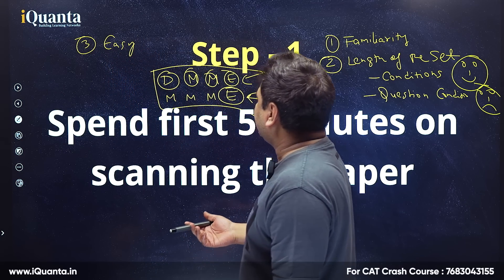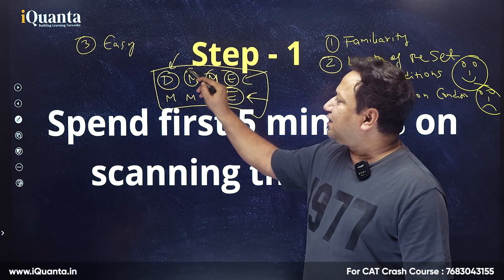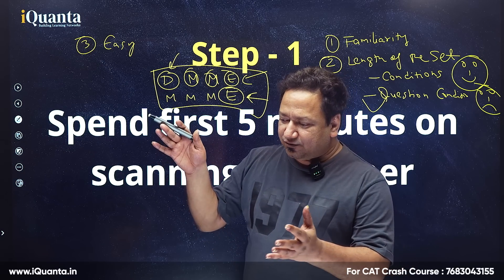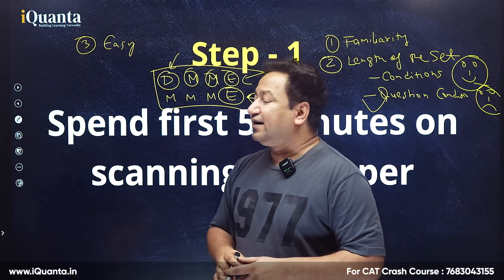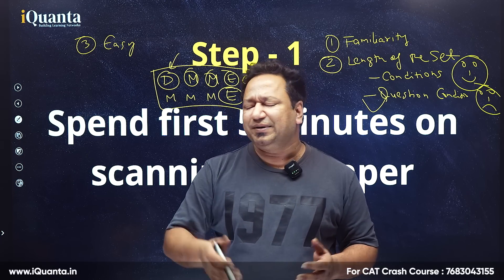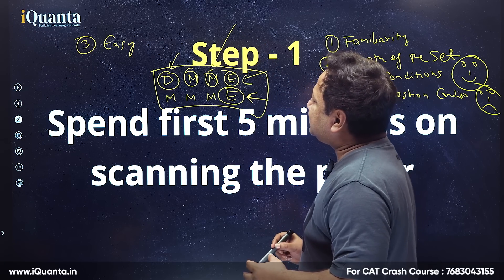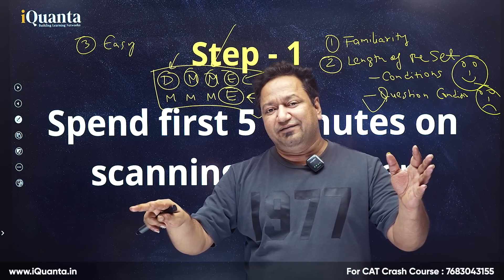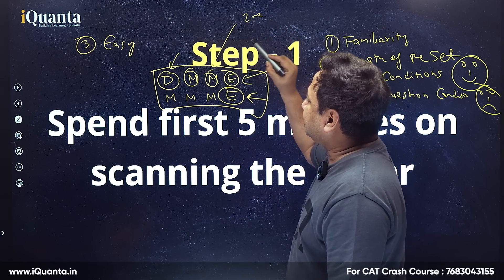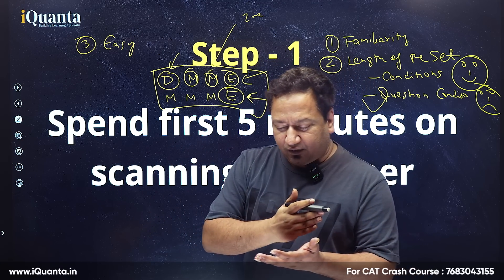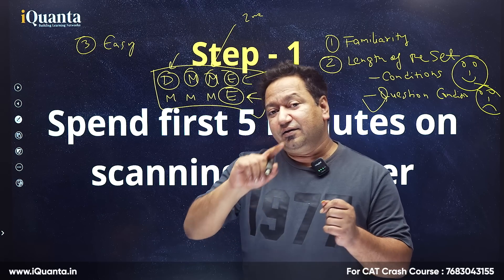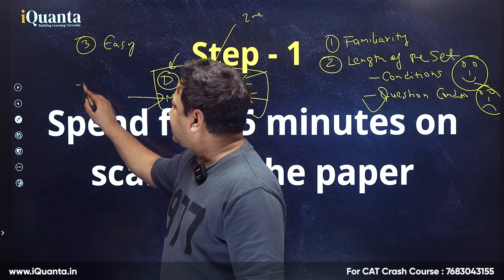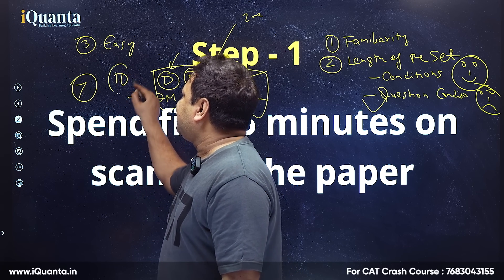After identifying the easy set, the second set should be moderate — you don't want to go into a difficult one. How do you identify a difficult set? First point: questions have their own conditions. Second: when the problem statement has very little data, it will always be a difficult set. Also, if you are not familiar with the topic, that can make it difficult too. For the moderate set, it is not that you have to solve every question — that can be practically impossible.